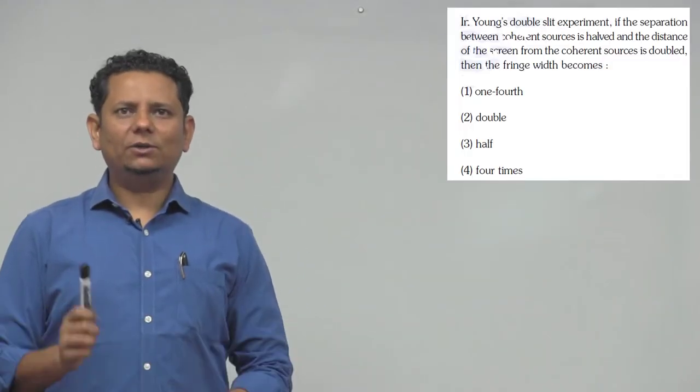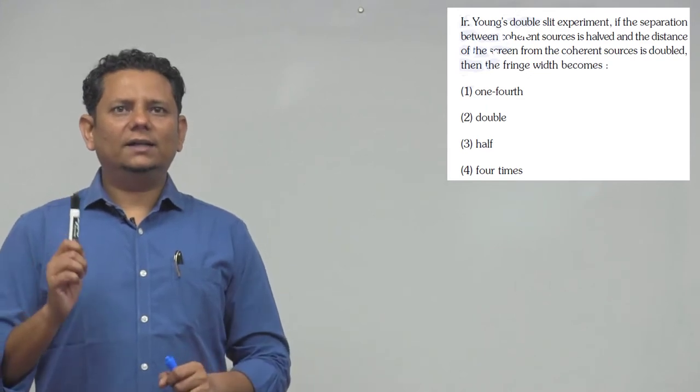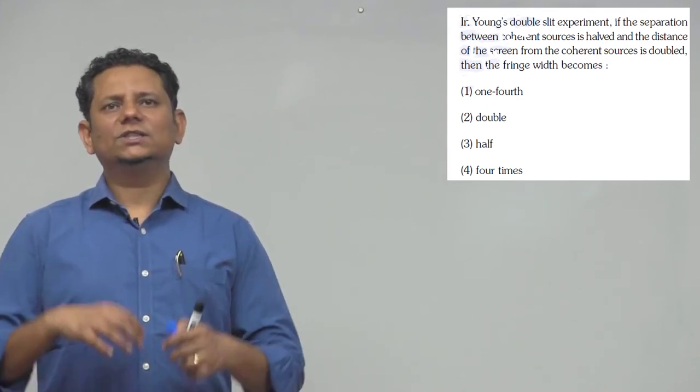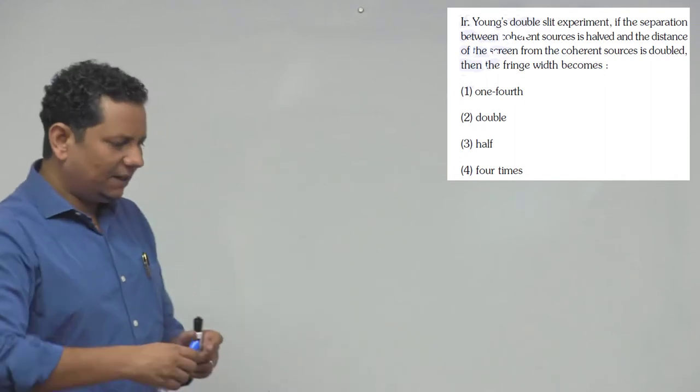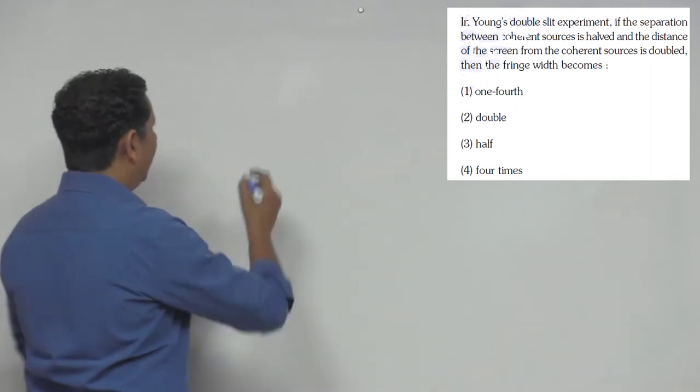Next question: In Young's double slit experiment, if the separation between coherent sources is halved and the distance of the screen from the sources is doubled, then what happens to the fringe width? This question is about beta, the fringe width.